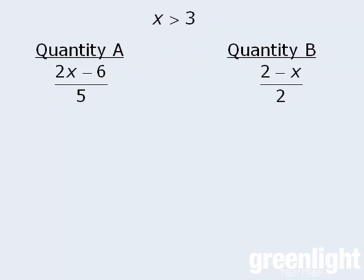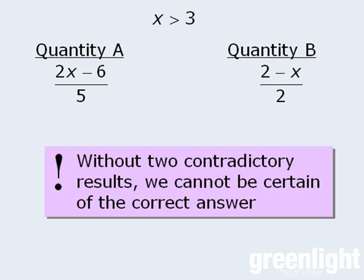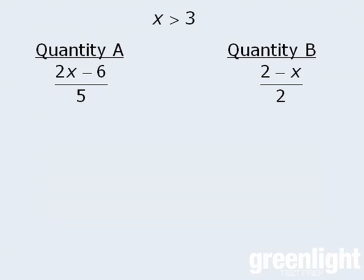Okay, one option here is to plug in values for x, but as we discussed in a previous lesson, this approach has some limitations. The biggest drawback is that without two contradictory results, you cannot be certain of the correct answer. Another option here is to perform matching operations on both quantities with the goal of simplifying the quantities so that they're easier to compare. Let's try that.